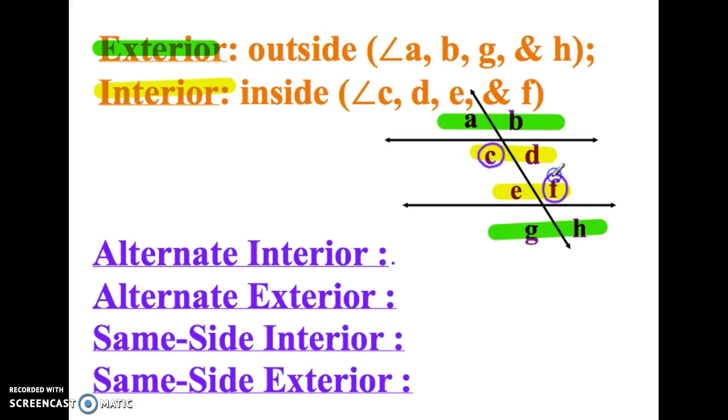So for example, you could do C and F. They're alternate. They're kind of opposite each other, both inside, but one's on the left top, one's on the right bottom. C and F would be a pair of alternate interior angles. And I'm going to ask you to do more of these.